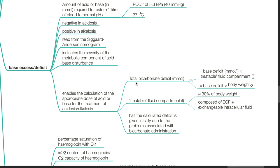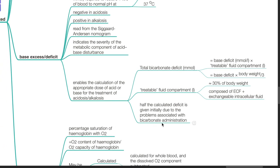Therefore, total bicarbonate deficit equals base deficit times body weight divided by 3. The treatable fluid compartment is composed of ECF plus exchangeable intracellular fluid. Half of the calculated deficit is given initially due to the problems associated with bicarbonate administration.